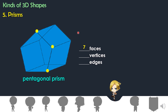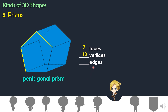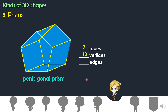Let's count the vertices: one, two, three, four, five, six, seven, eight, nine, ten. There are ten vertices in pentagonal prism. How about the edges? One, two, three, four, five, six, seven, eight, nine, ten, eleven, twelve, thirteen, fourteen, fifteen. There are fifteen edges in pentagonal prism.